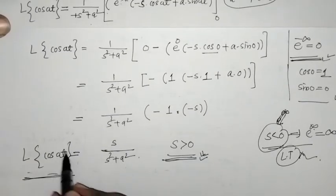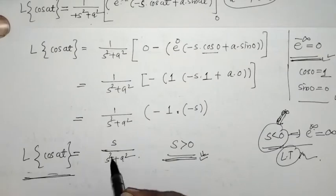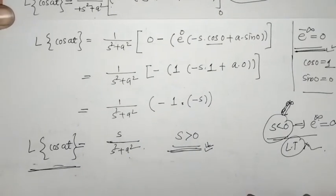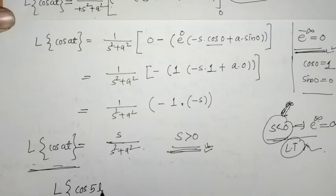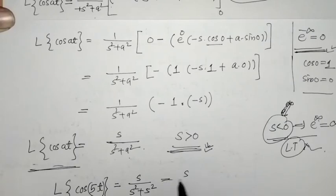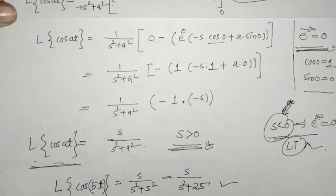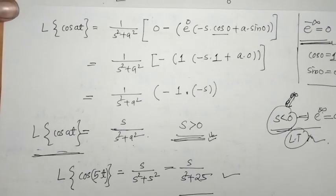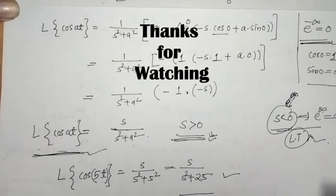So we have found the Laplace of cos(at): it equals s upon (s² + a²), where a is a constant. As an example, we can find the Laplace of cos(φt) using this formula, giving s upon (s² + φ²). That's it for now — see you in the next video. Thank you, keep watching.